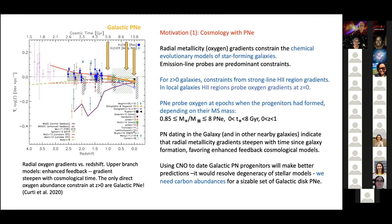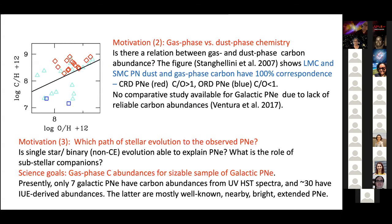Those yellow dots you see are from Stanghellini and Haywood 2018, where we divide the planetary nebulae into age populations. The problem is that these age populations are based only on nitrogen and helium abundances, which are the easy ones. But really, without carbon in planetary nebulae, you cannot resolve the degeneracy of the models. So it's much better to have carbon. And then we started to look for carbon in galactic planetary nebulae.